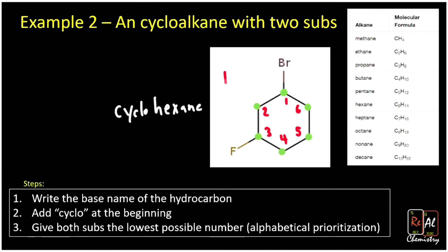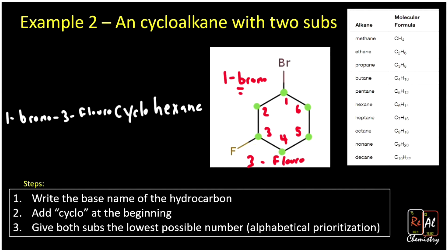So we're going to tack on '1-bromo' and '3-fluoro'. Which one comes first? Bromine again comes first in the alphabet, so that's the one that leads off our name. We put '3-fluoro' directly in front of cyclohexane, and then '1-bromo' way up front. So this molecule becomes 1-bromo-3-fluorocyclohexane. Notice — as soon as we have multiple substituents, we do need to give them numbers. One substituent: no number needed. Two or more substituents: you need the numbers.